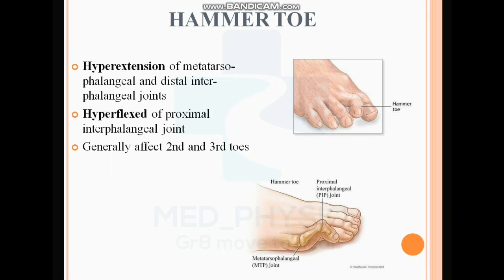Next is hammer toe. This deformity affects the phalanges or toes. There is hyperextension of the metatarsophalangeal joint and the distal interphalangeal joint, and hyperflexion of the proximal interphalangeal joint. This looks like a hammer, which is how it is called hammer toe. It generally affects the second and third toes and can eventually also affect the little finger in the older population.